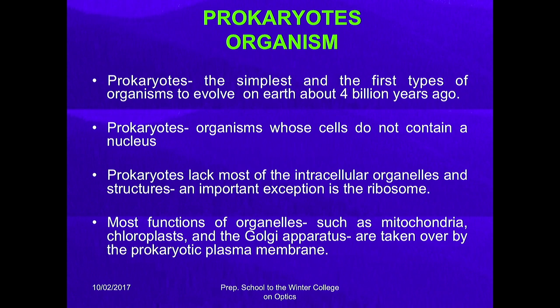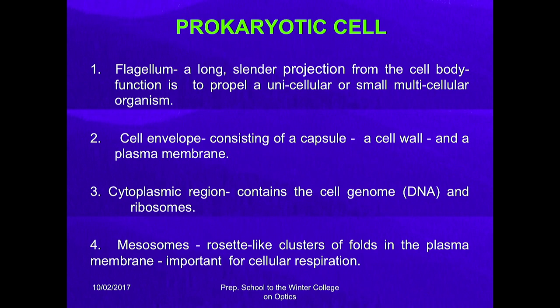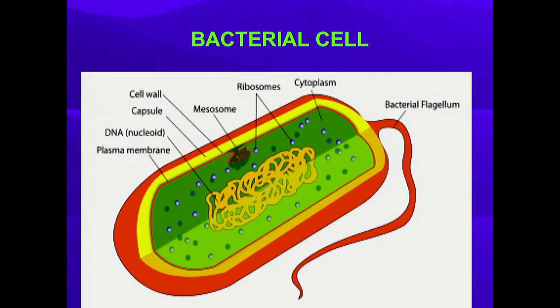Prokaryotes are the simplest and first type of organism to evolve on earth, about 4 billion years ago. Their cells do not contain a nucleus and lack most intracellular organelles and structures, with an important exception: ribosomes. Most functions of organelles such as mitochondria, chloroplast, and Golgi apparatus are taken over by the prokaryote's plasma membrane. This is a bacterium — a unicellular organism without any nucleus, an example of a prokaryote. It has a cell wall, a capsule, cytoplasm, a flagellum for movement, and DNA present directly in the cytoplasm.